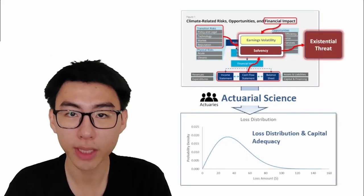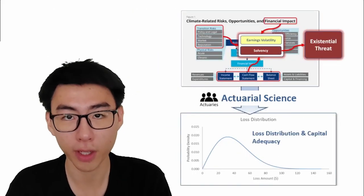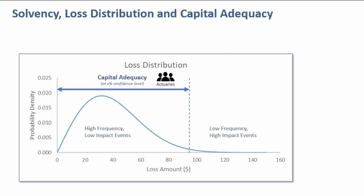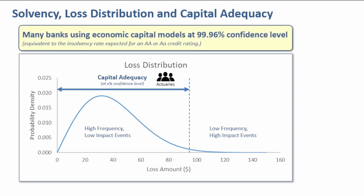From actuarial science perspective, all this refers to the loss distribution. Loss distribution helps us to estimate capital adequacy at a certain confidence interval. Many banks adopted 99.96% confidence interval. The remaining expected shortfall is the risk of insolvency that we need to assess, commonly known as the tail probability.